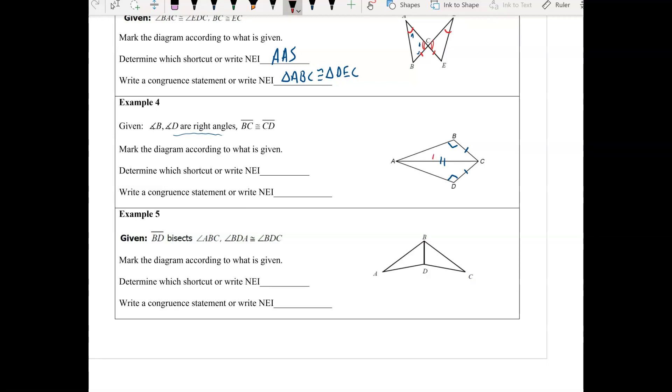So I am seeing hypotenuse and a leg, otherwise it's going to be SSA. If you don't see this as hypotenuse leg, if you look at this as side side angle, you should rule it out, because if those weren't right angles, but they're just congruent angles, it would be side side angle, it would be not enough information. However, this one is HL, and it is triangle ABC is congruent to triangle ADC.